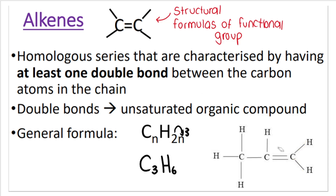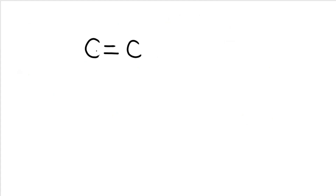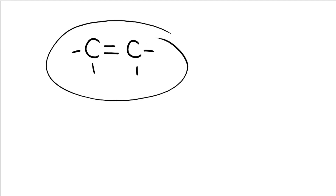We've spoken about the general formula. The functional group of an alkene is the carbon-carbon double bond — this is what makes an alkene an alkene. The structural formula of the functional group shows a carbon double-bonded to another carbon, with each carbon having the remaining two bond lines going to other atoms. Each carbon still needs four bonds total.